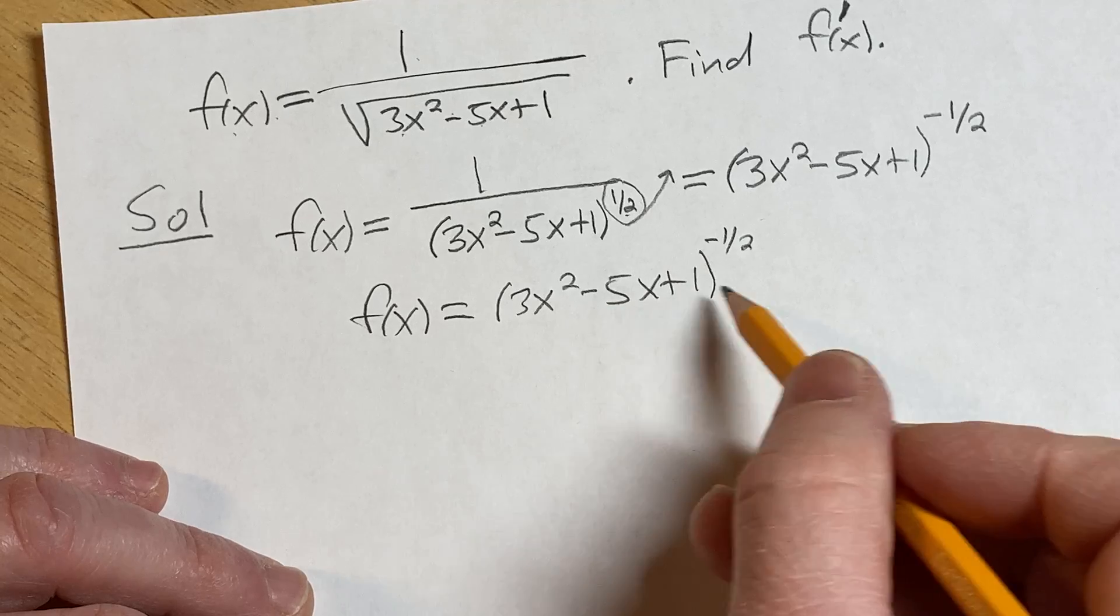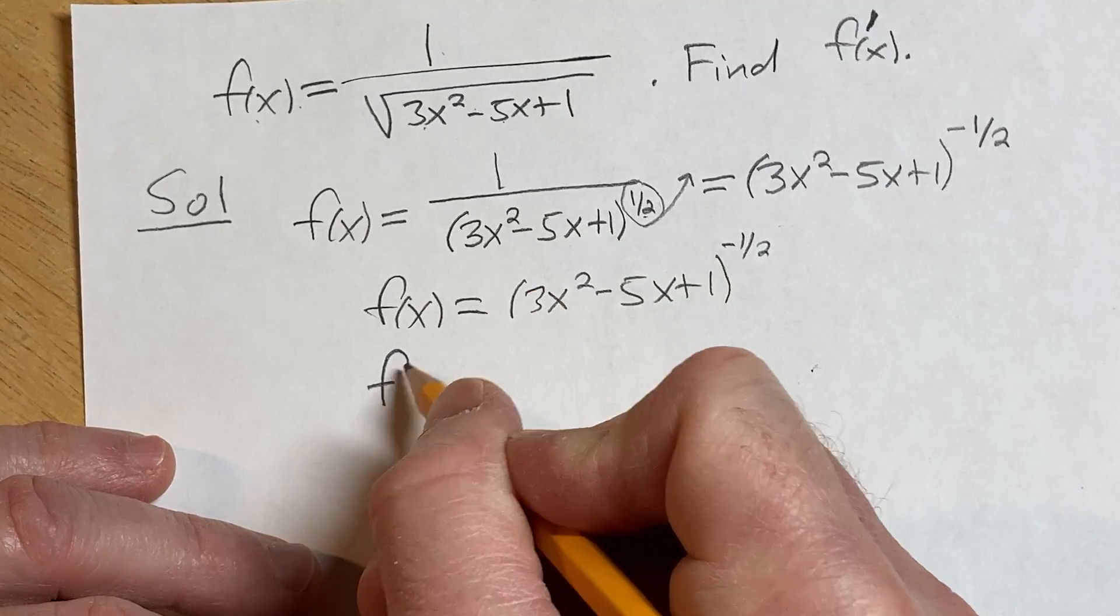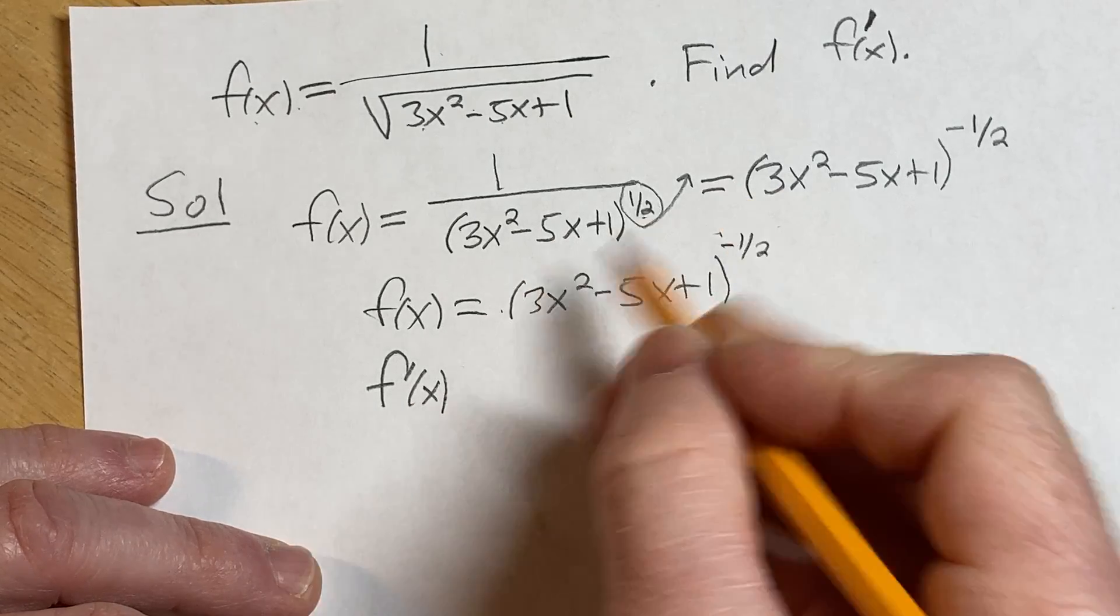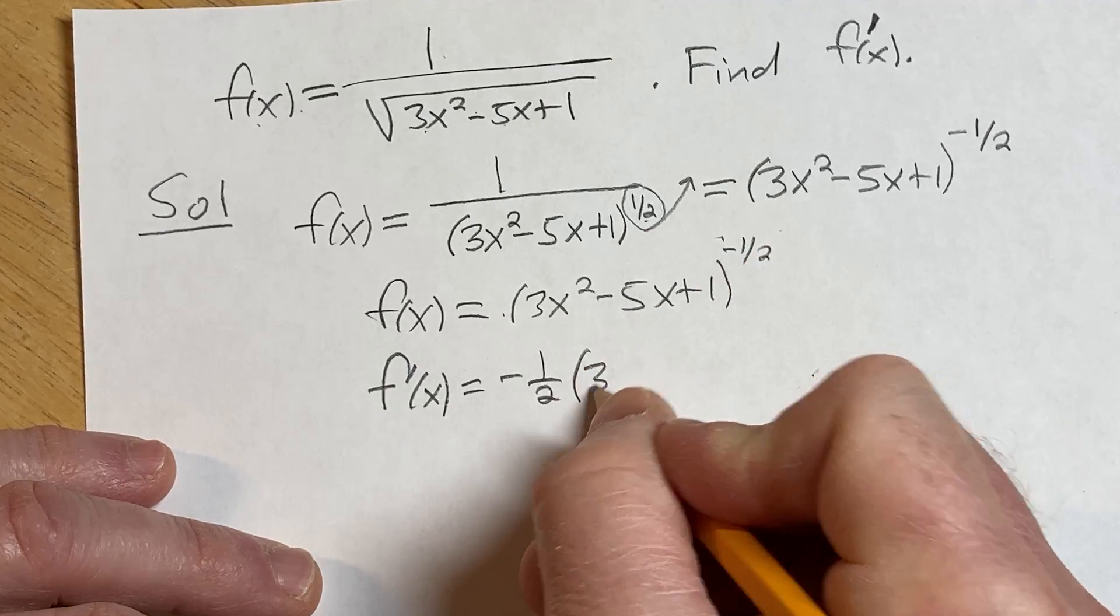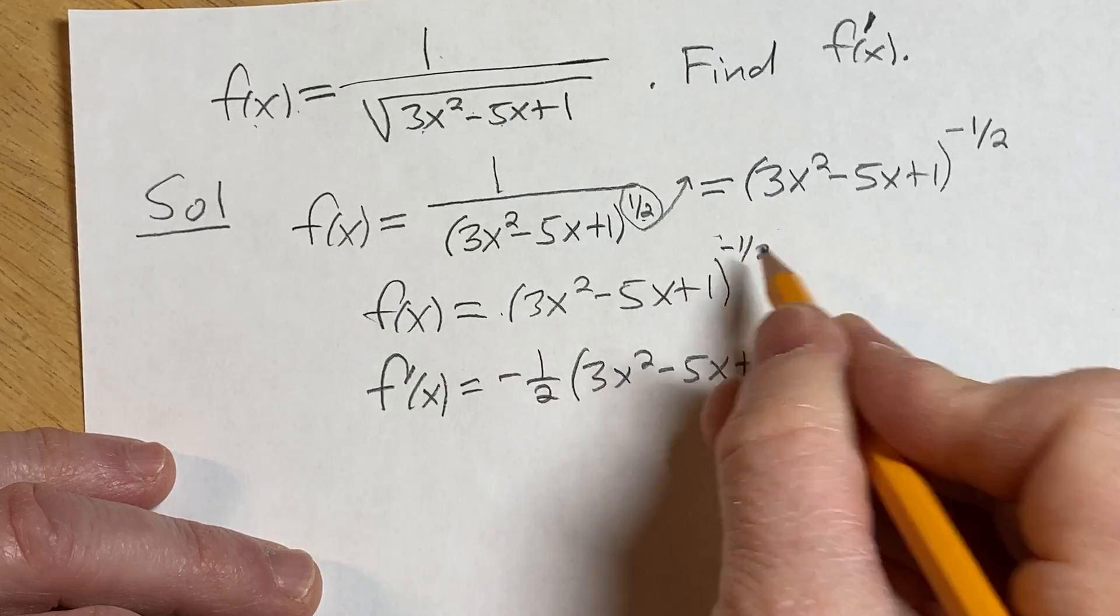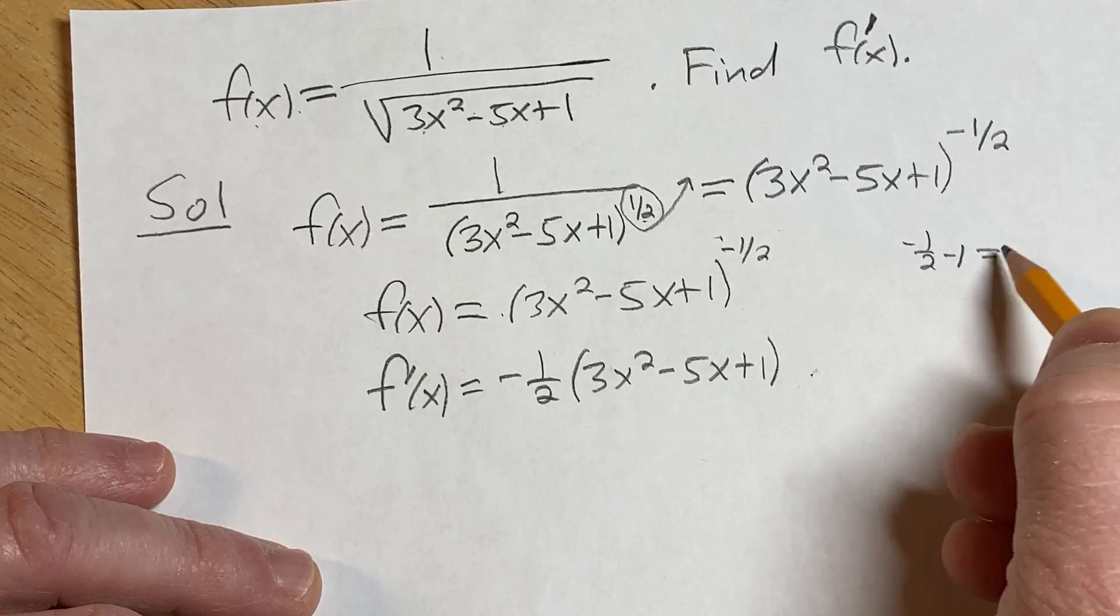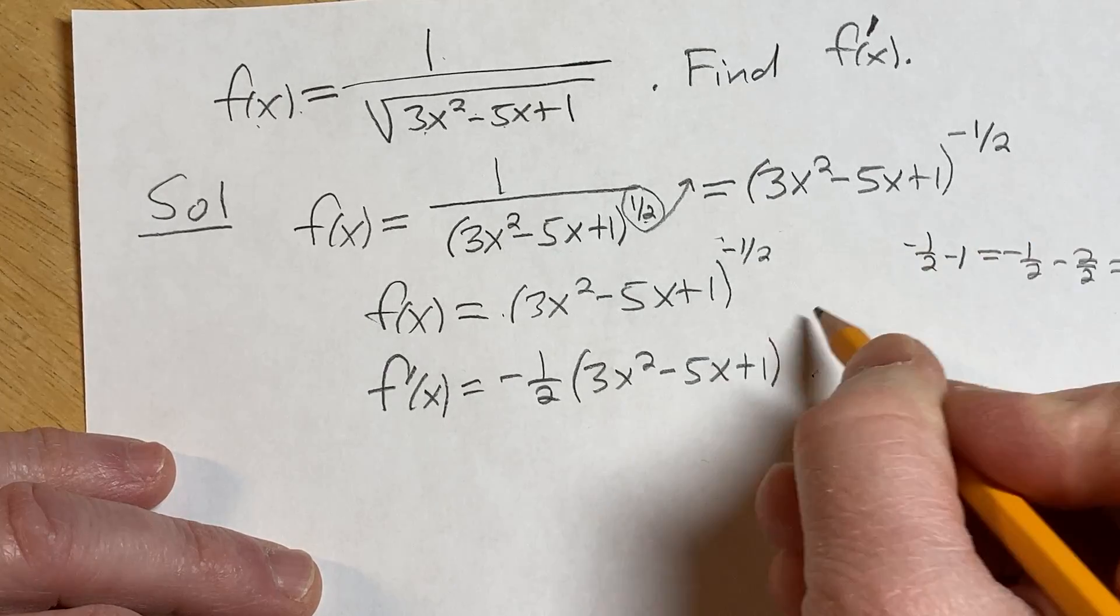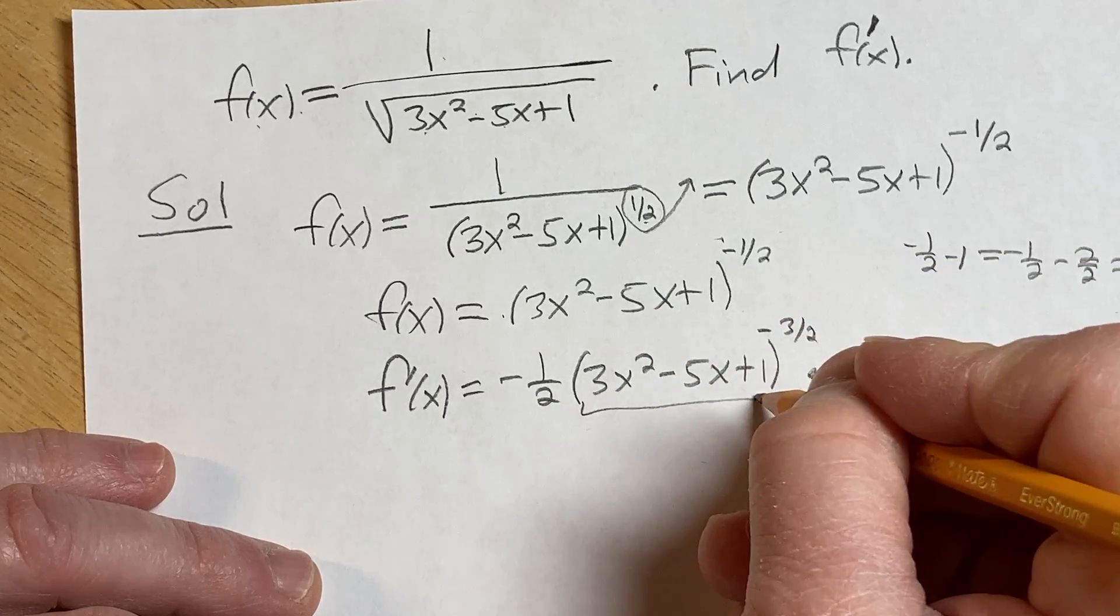Now we have something to a power, so we can take the derivative and use the chain rule. f prime of x will bring down this negative 1 half, leave the inside untouched, 3x squared minus 5x plus 1, and then subtract 1 from the exponent. Negative 1 half minus 1 is the same thing as negative 1 half minus 2 halves, which is negative 3 halves, times the derivative of our inside function here.